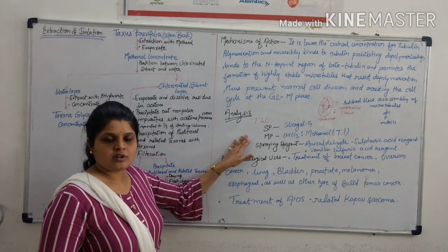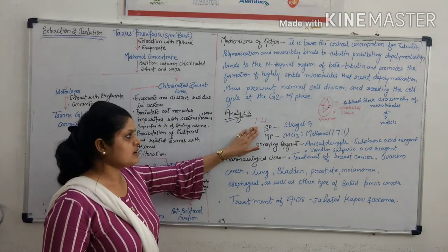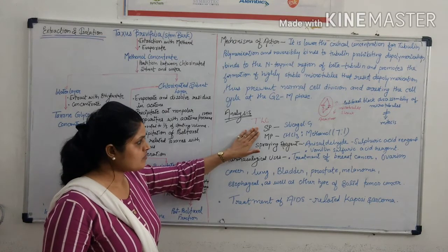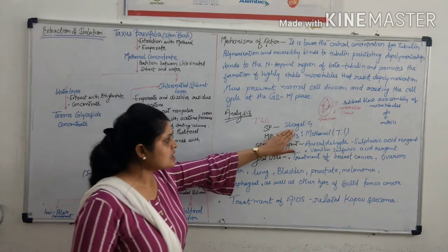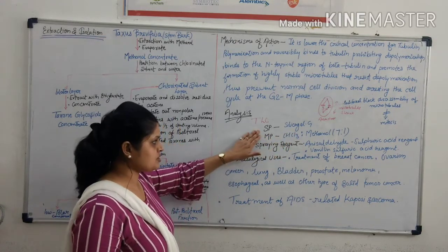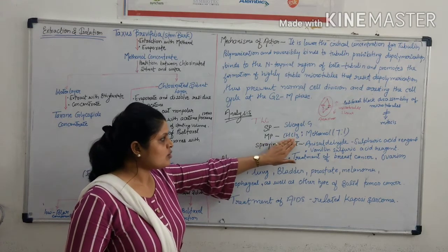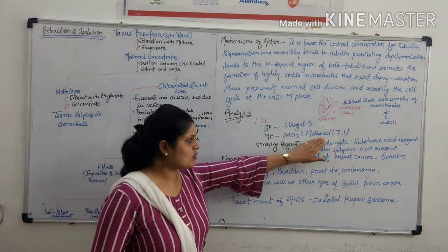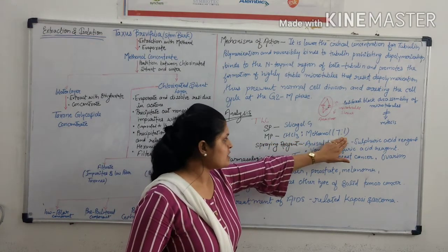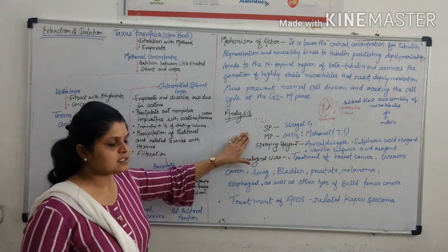Taxol is analyzed by thin layer chromatography in which silica gel is used as the stationary phase and chloroform-methanol in a 3:7:1 ratio is used as the mobile phase.